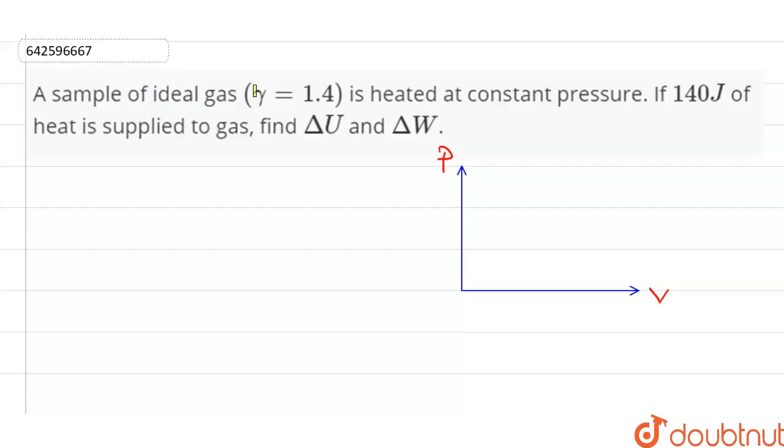A sample of ideal gas that has gamma equal to 1.4 is heated at constant pressure. If 140 joules of heat is supplied to the gas, find delta U and delta W. Delta U is the change in internal energy and delta W is the work done.